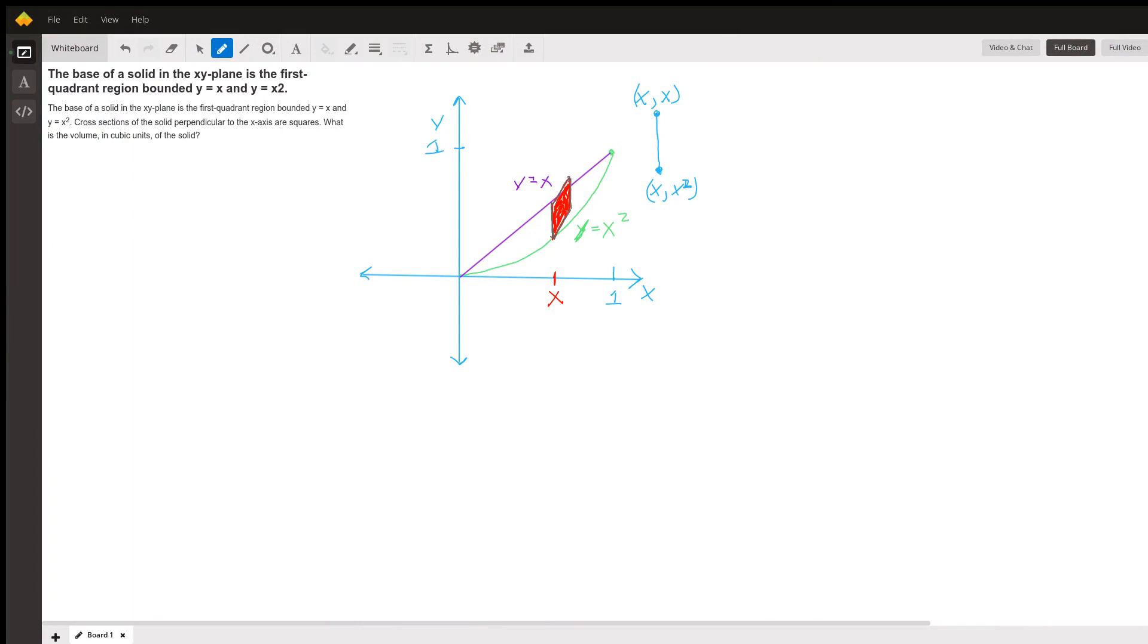We see on the coordinate plane there, I have a little bit of the graph of y equals x squared and a little bit of the graph of y equals x from the origin to where those two functions intersect at 1, 1.